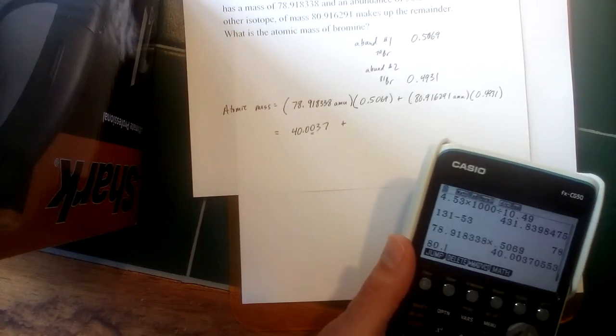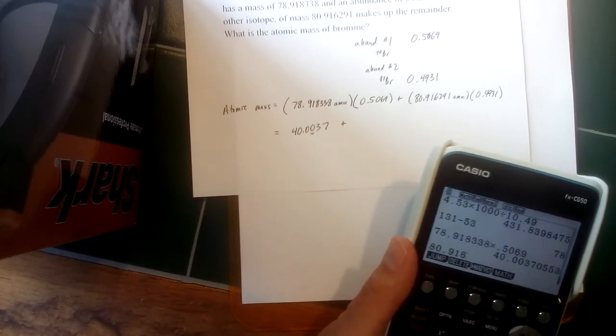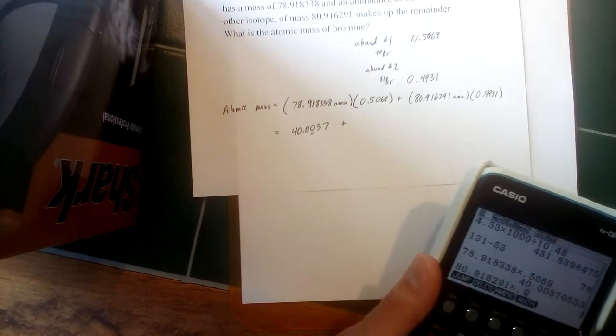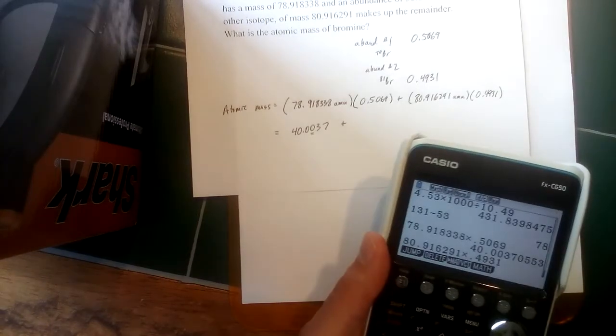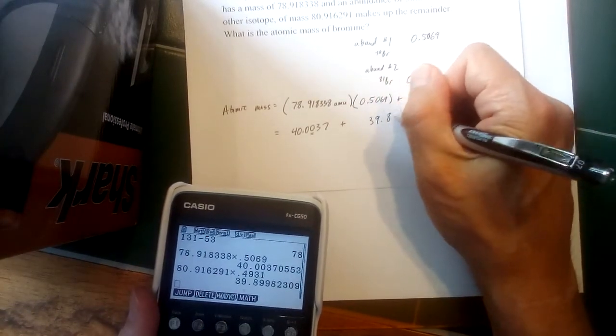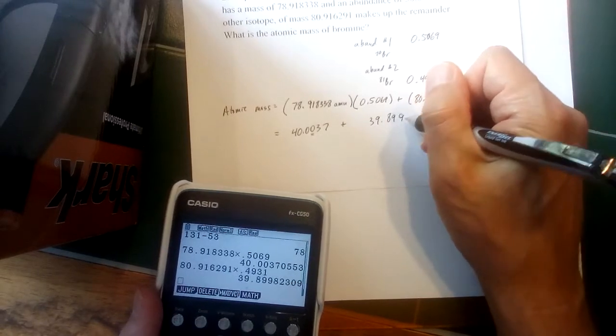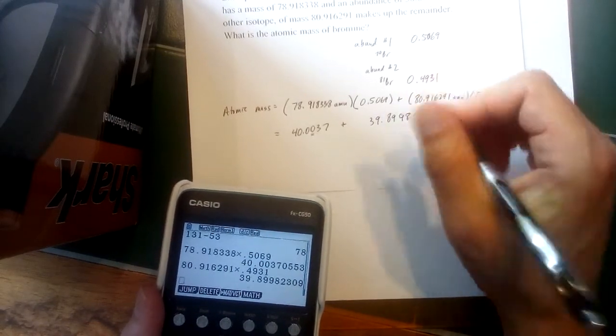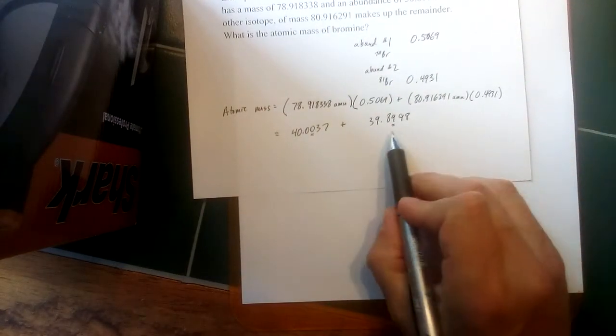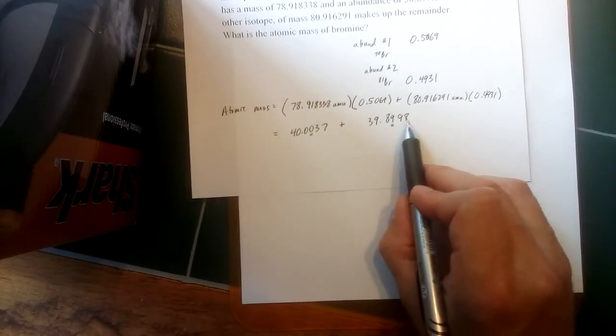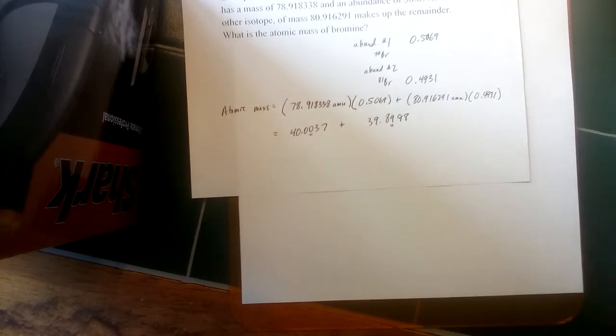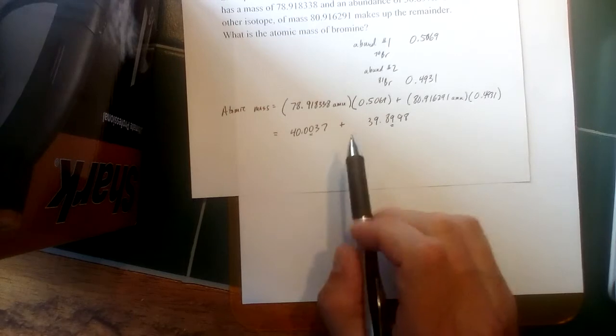Similar for the other term here, we'll take 80.916291, multiply that by its abundance 0.4931, and that is 39.8998. And similar there, the last place that had significance was really that second digit after the decimal, but I'm going to keep a little more in there just to make sure that we don't have that rounding error.